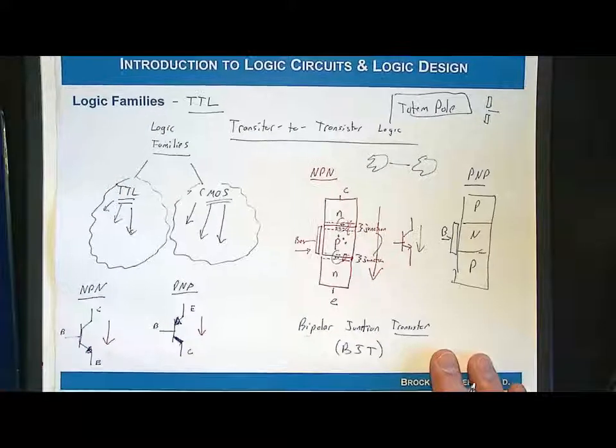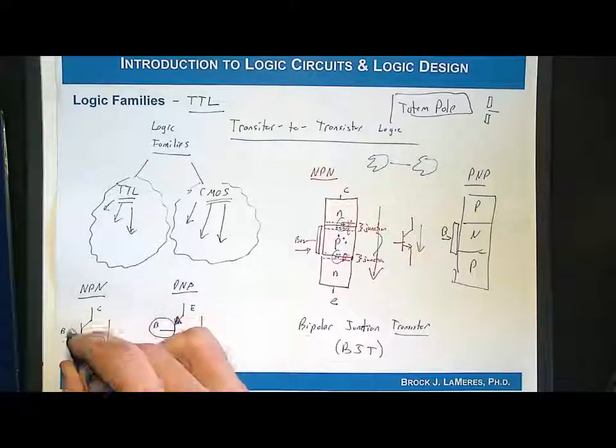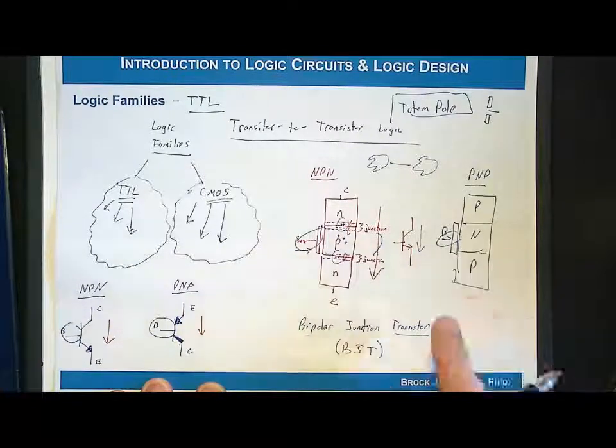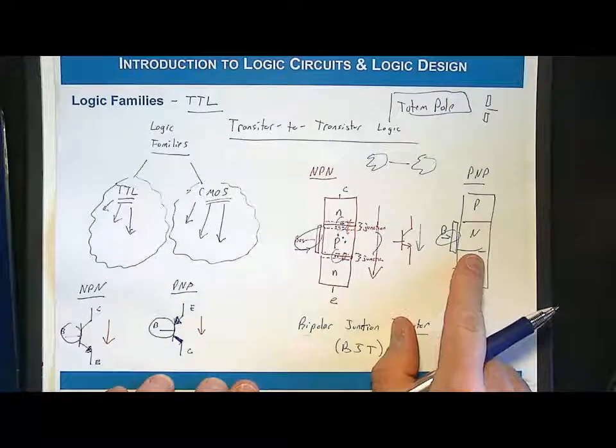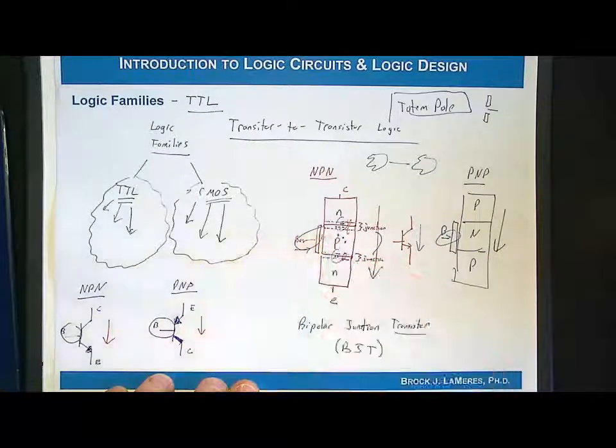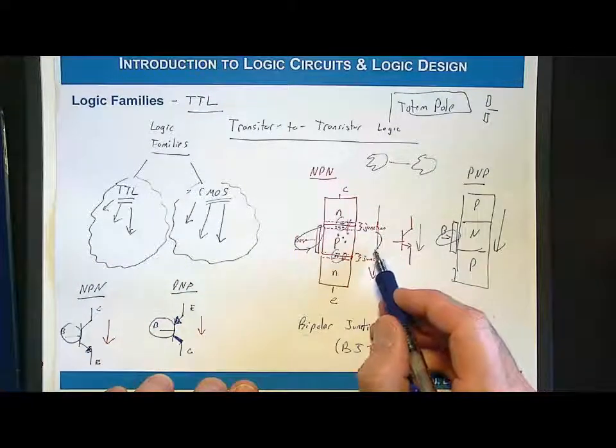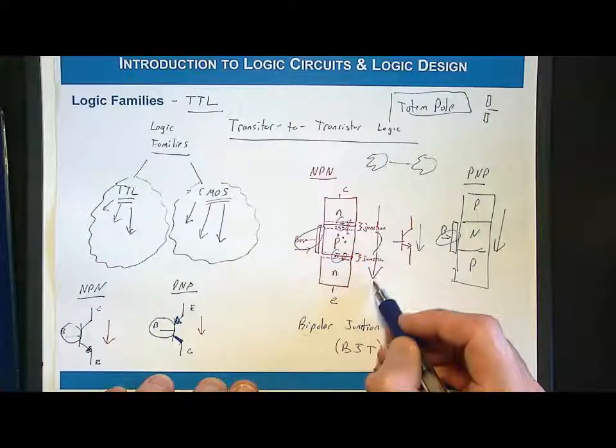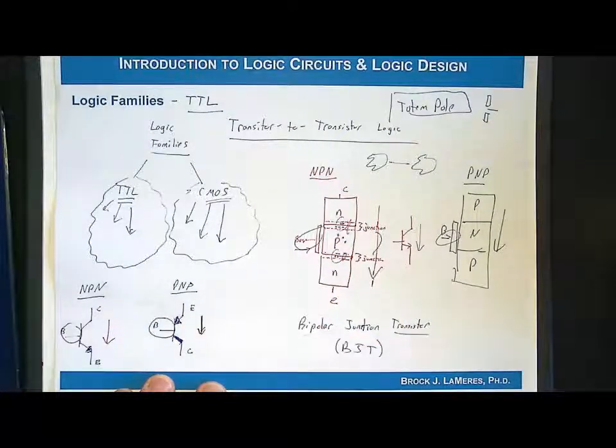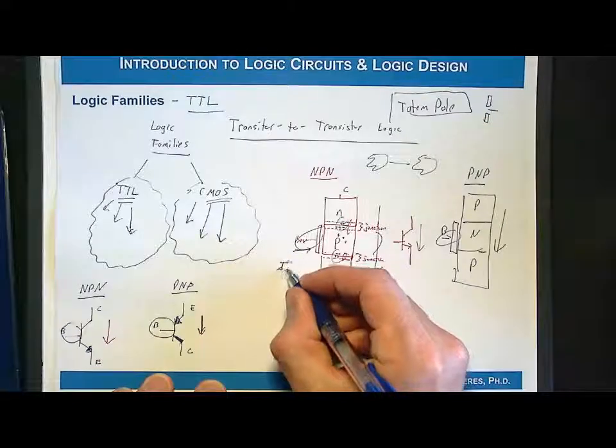Here's the more important thing about this. This current that goes into the base is required at all times to keep this thing operational. Current will not flow unless current is flowing into the base. The base current is small relative - usually 100 or 200 times smaller than the actual current flowing through the main terminals of the transistor. But it doesn't matter how small it is because it's there.